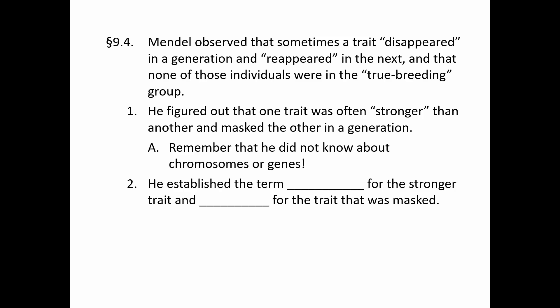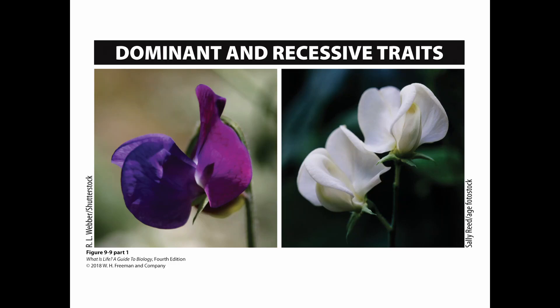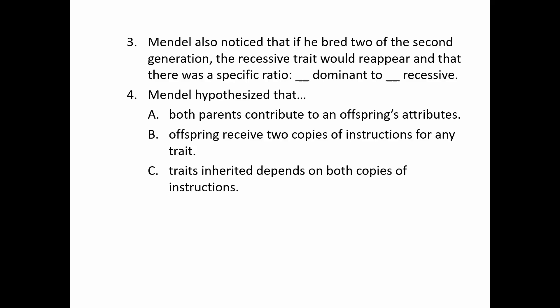It's important to note this is well before we understood chromosomes, DNA, genes — all that kind of stuff. This is pre-genetic information age. He's really the one establishing this as even a concept. So he establishes the term dominant for the stronger ones and recessive for the masked traits, and those are terms we still use today. In this case of flower color, purple was dominant and white was recessive. He also noticed that the recessive trait came back in a very specific ratio — three dominant offspring for every one recessive.